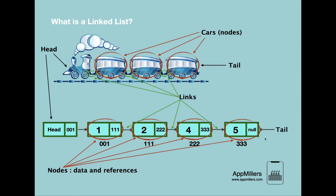If we summarize the components of the linked list: the first component is head, which has a reference to the first node in the list. You might ask why we need head — the answer is that if we don't know where the linked list starts, we cannot access any element. So head is a must for locating the linked list in memory.